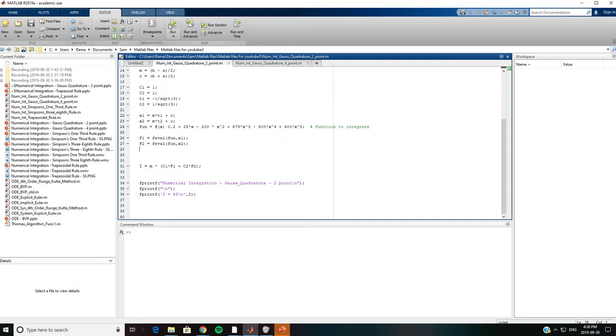Once we run this, we get a value of I equals 1.822578. Our exact value has been 1.640 and so on, but by only picking two points, the accuracy is still not too bad with the Gauss Quadrature two-point method.